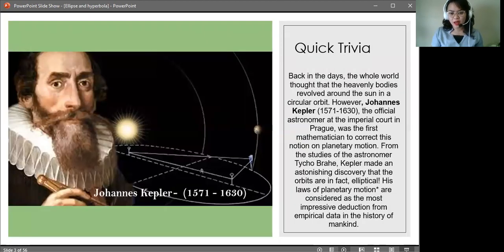A quick trivia. Back in the days, the whole world thought that heavenly bodies revolved around the sun in a circular orbit. However, Johannes Kepler, the official astronomer at the imperial court of Prague, was the first mathematician to correct this notion of planetary motion.